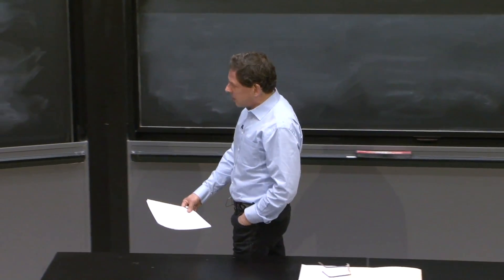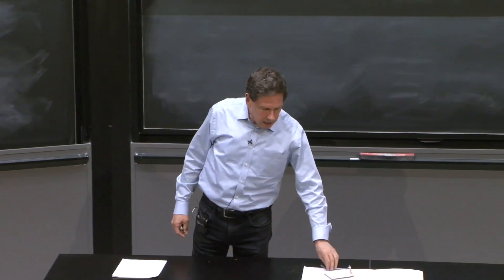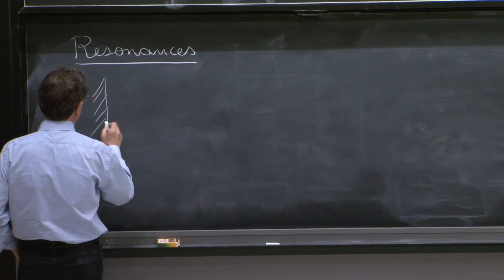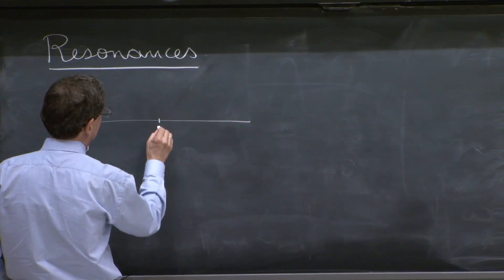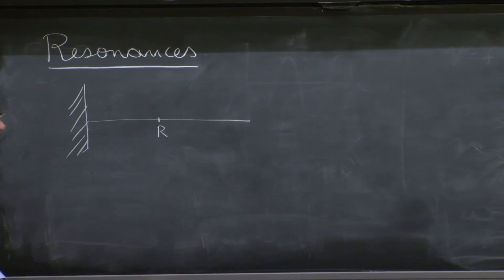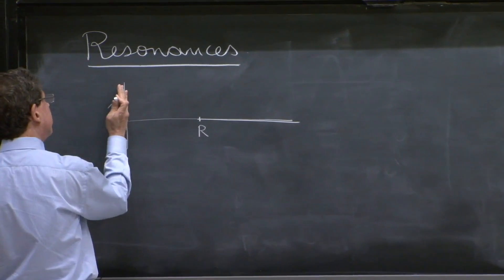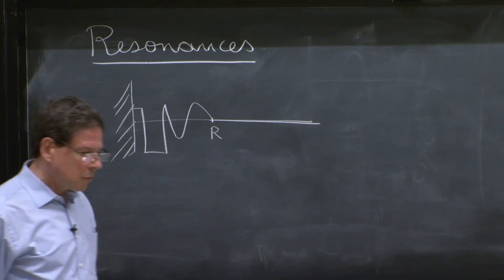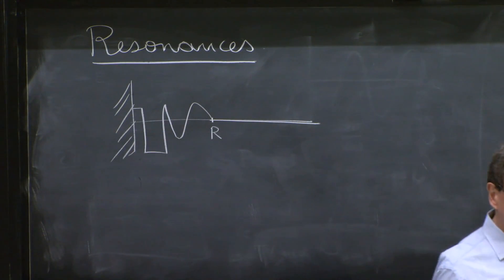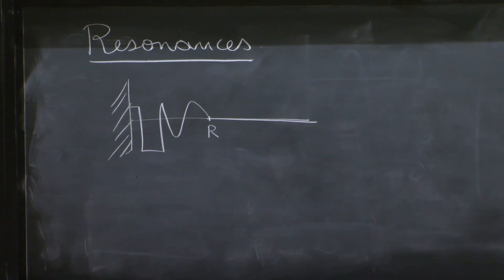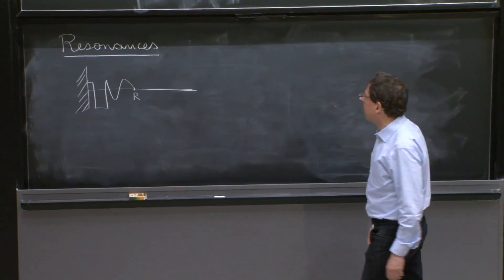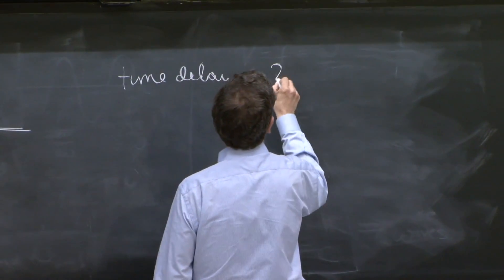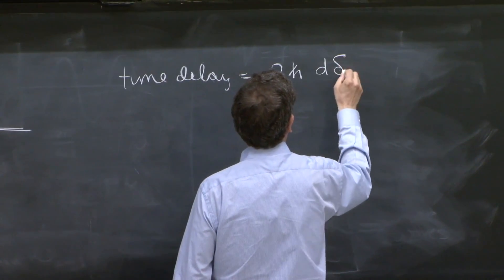So let's begin the subject of resonances by asking a question. If you have the usual potential, the short range potential, which means that for some distance r greater than zero, the potential is zero. Here we put a barrier, and over there could be anything, some potential. We've computed this concept of time delay. There's a formula for the time delay. In fact, it was given by 2ℏ dδ/dE. The time delay.